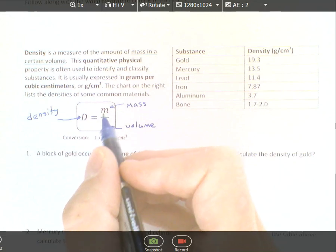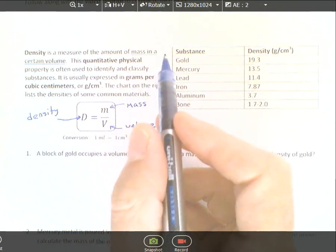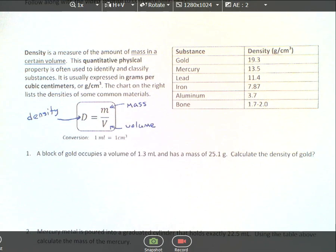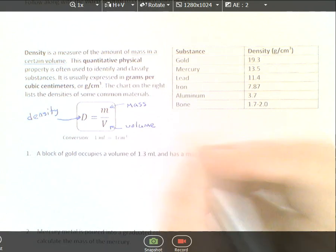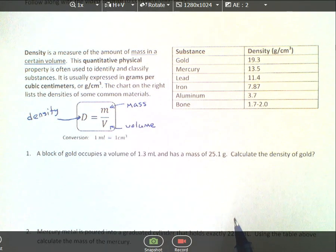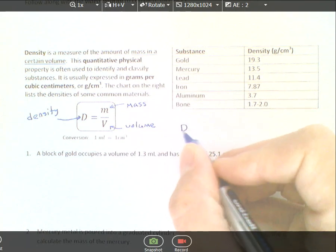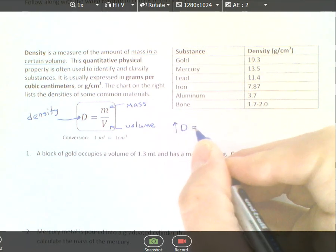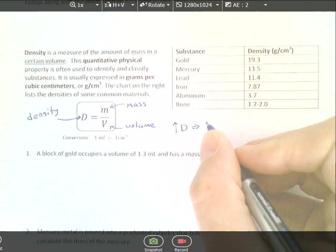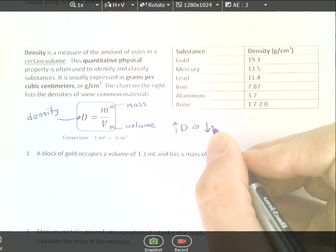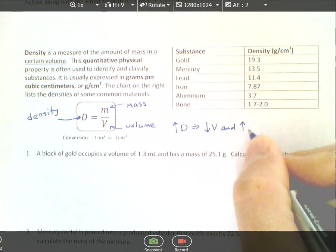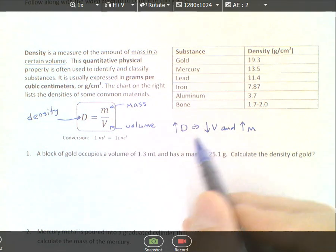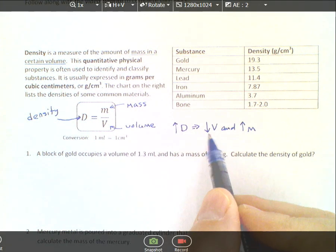Density is the amount of mass per volume or within a given volume. If you want high density, decrease the volume as much as possible and increase the mass. To get really high density, take a lot of mass and put it inside a small amount of volume.